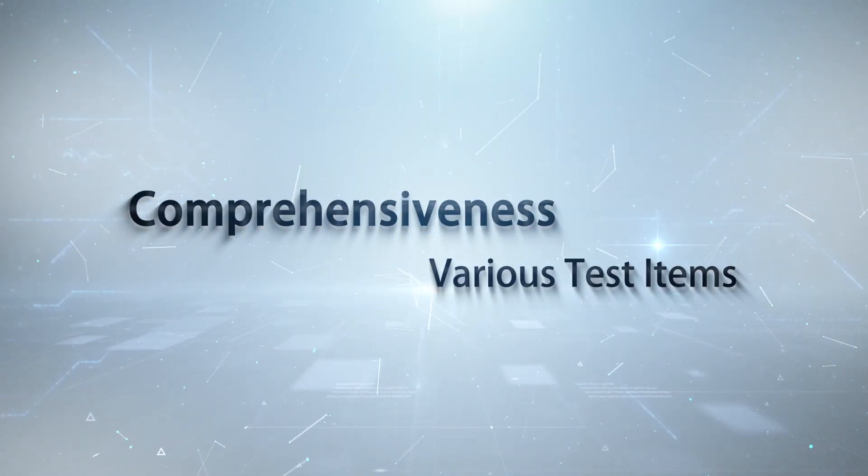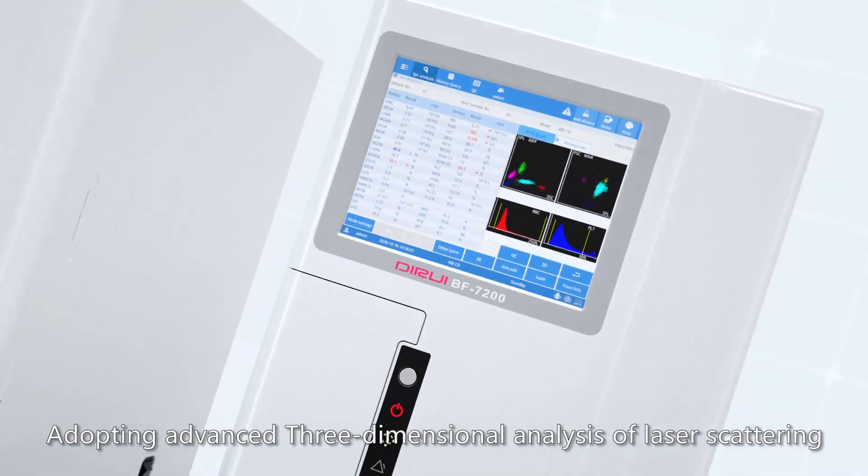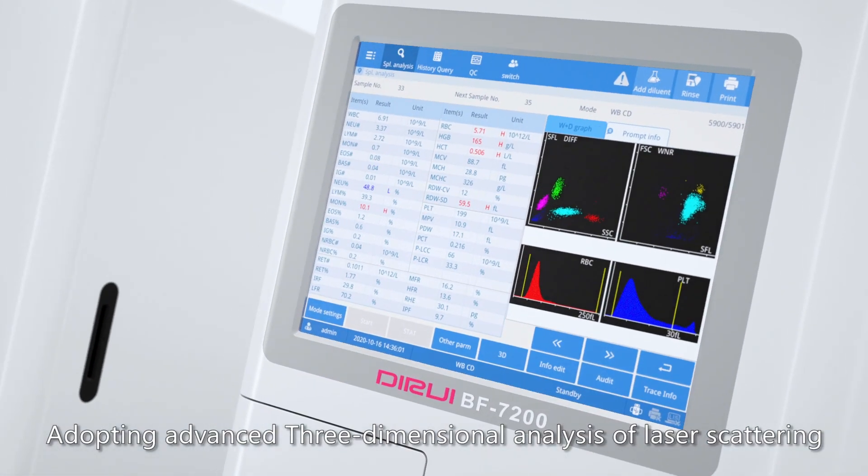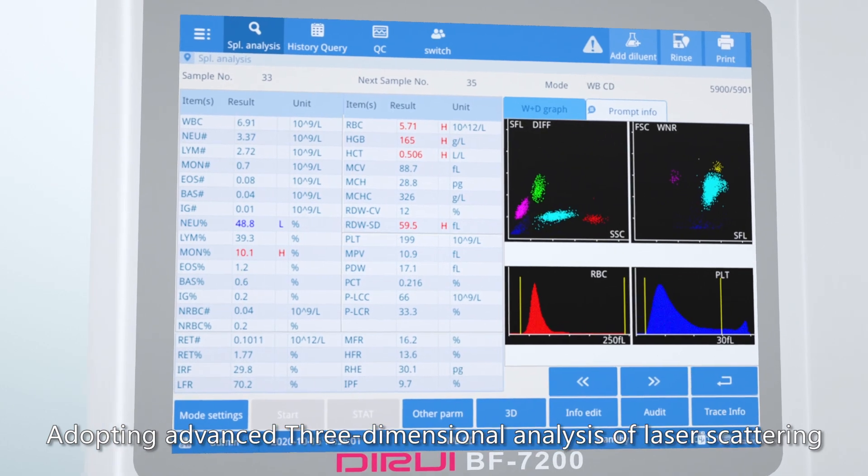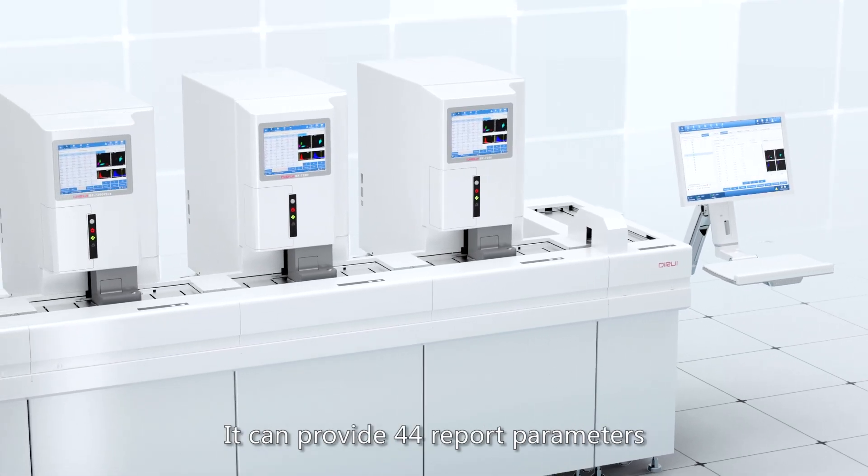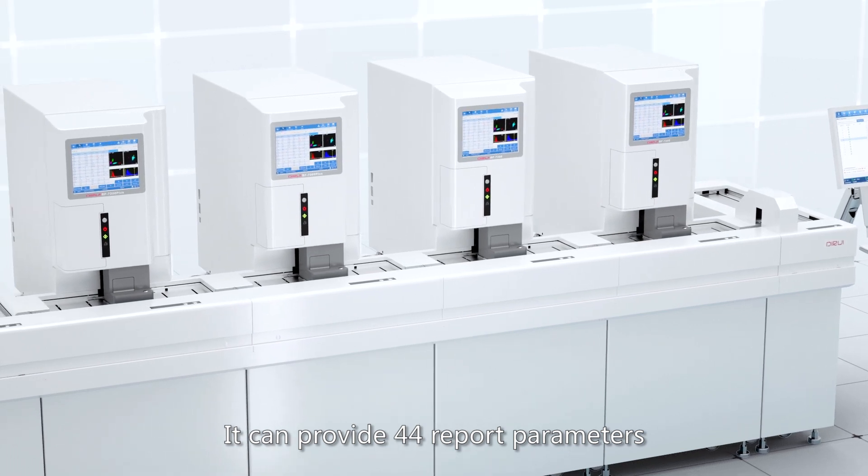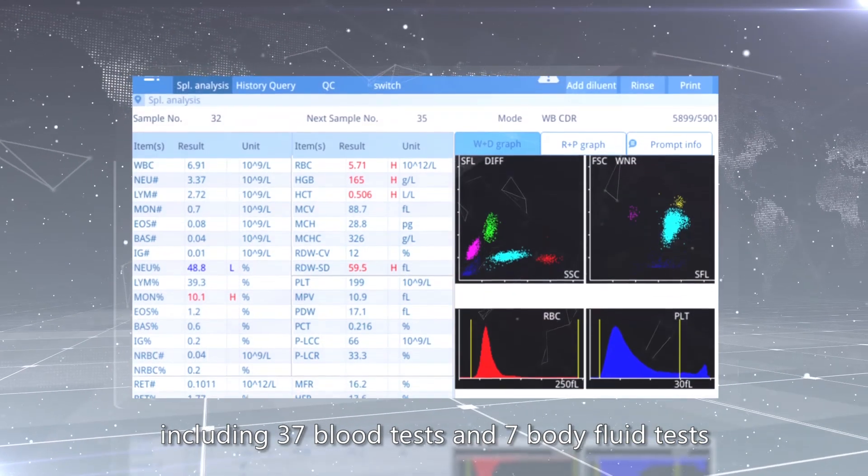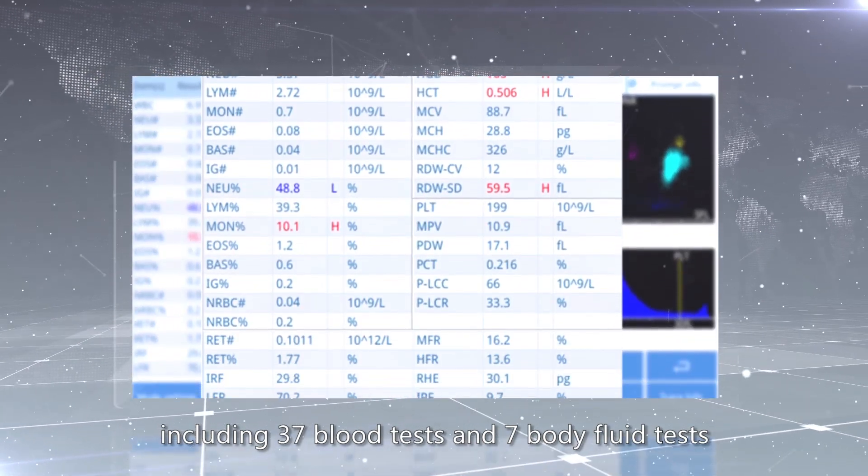Comprehensiveness, various test items. Adopting advanced three-dimensional analysis of laser scattering and fluorescent staining technology, it can provide 44 report parameters, including 37 blood tests and seven body fluid tests.